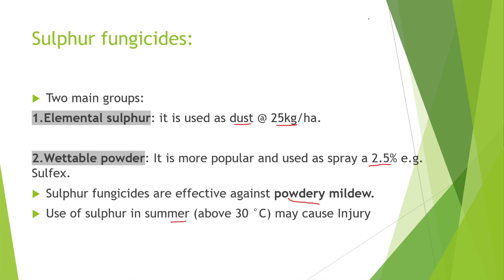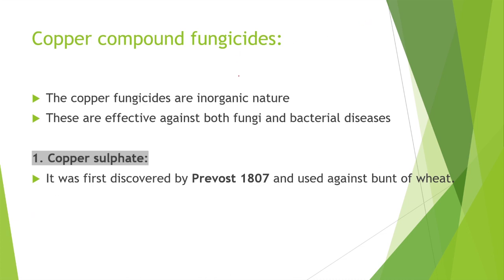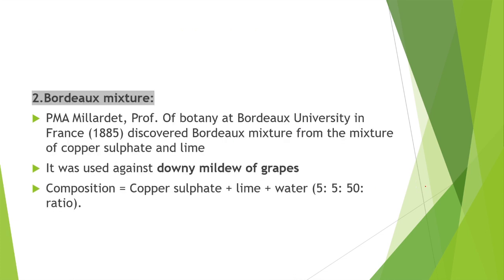The second group is copper compound fungicides, which are inorganic in nature and effective against both fungal and bacterial diseases. Copper sulphate was first discovered by Prevost in 1807 and used against bunt of wheat. Bordeaux mixture was discovered by Professor P.M.A. Millardet in France, from a mixture of copper sulphate and lime, used against downy mildew of grapes. Its composition is copper sulphate + lime + water in a 5:5:50 ratio.